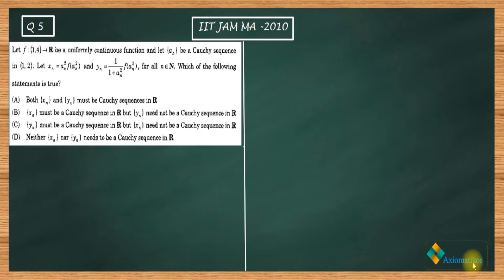Hello dear students, welcome to the Axiomatic course. This video is part of the solution series for IIT JAM 2010. We are here with Problem 5 of your paper — this is again an analysis problem. The problem states that f is a function from the open interval (1, 4) to ℝ which is a uniformly continuous function, and let {an} be a Cauchy sequence in (1, 2).